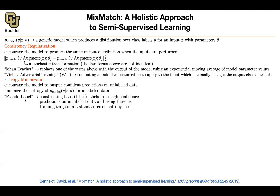You can have the concept of pseudo labels, where you're going to use the previous version of your model to label the unlabeled data. It's going to put a distribution on the labels, and then you're going to pick the maximum, and then no gradients are going to go through it anymore. These are hard labels versus soft labels. And then there is the concept of sharpening.